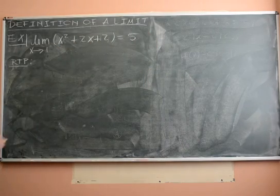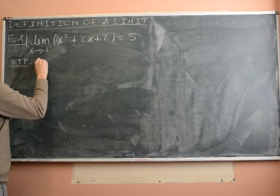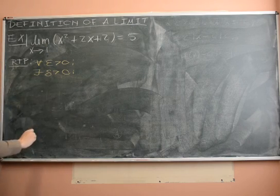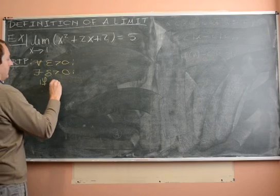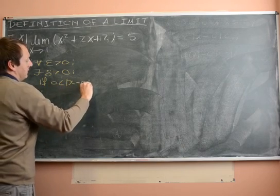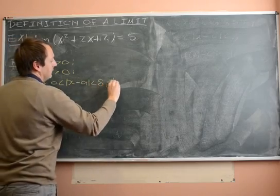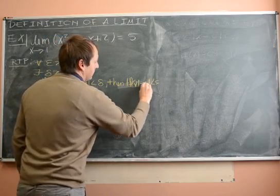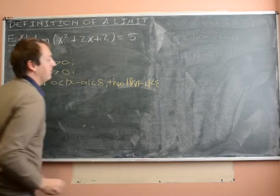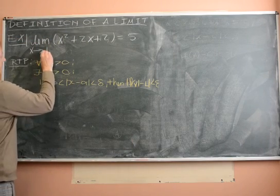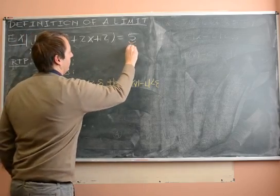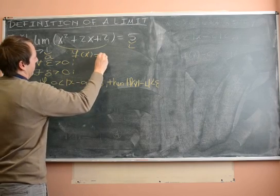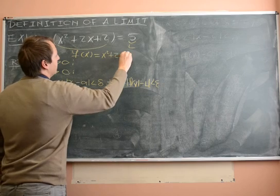According to the definition, we have to prove: for any epsilon greater than 0, there exists a delta greater than 0 such that if the absolute value of x minus a is between 0 and delta, then the absolute value of f(x) minus L is less than epsilon. In this case, a is 1, L is 5, and f(x) is x squared plus 2x plus 2.